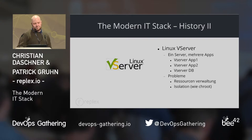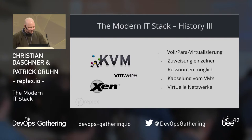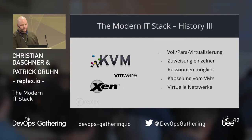A few years later we started with para-virtualization and full-virtualization with KVM, VMware, and Xen. There are many other solutions for virtualization, but we used those three. This was the first time we had some resource management and real isolation of the processes and the operating systems.